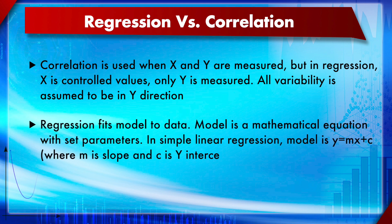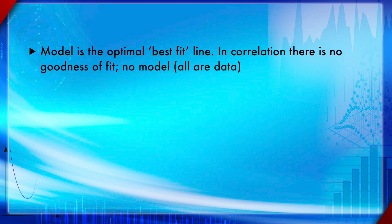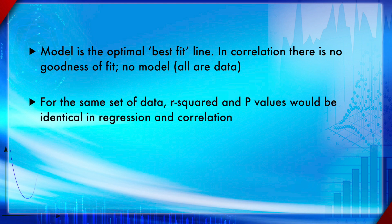Regression fits a model to the data. The model is a mathematical equation with set parameters. In simple linear regression, the model is y = mx + c, where m is the slope and c is the y-intercept. The model is an optimal best-fit line. In correlation there is no best-fit line or model — but in regression there is.